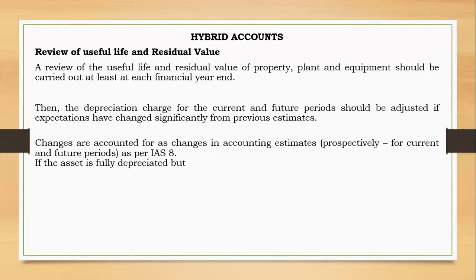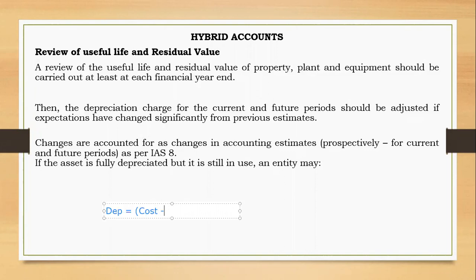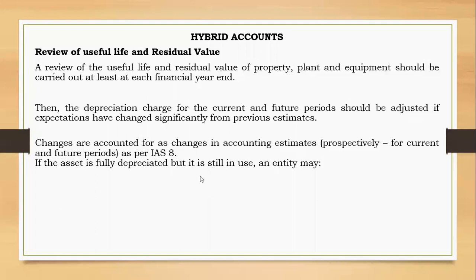Now, if the asset is fully depreciated but still in use, you have several choices. Depreciation is cost minus residual value over useful life. If you set the useful life at five years and five years have passed, the asset would be fully depreciated. But it is still in use — maybe you made a mistake in estimating the useful life, or you can revise it so that it can have a different value.